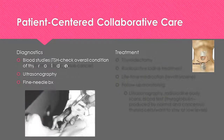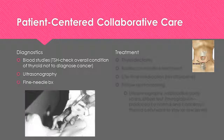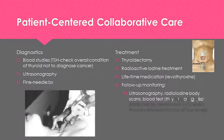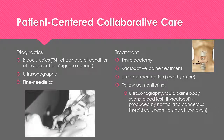Diagnostics will include blood studies, ultrasonography, and a fine needle biopsy. Treatment includes a thyroidectomy and radioactive iodine treatment, and the patient will need to take medication for a lifetime. Follow-up monitoring includes ultrasonography, radioiodine body scans, blood tests, and checking thyroglobulin levels, which is produced by normal and cancerous thyroid cells and should be kept at low levels.